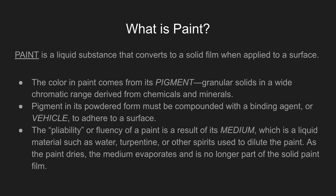The vehicle might be water, oil, or what's called acrylic. The pliability or fluency of a paint is a result of its medium, which is a liquid material such as water, turpentine, or other spirits used to dilute the paint. As the paint dries, the medium evaporates and is no longer part of the solid paint film. So technically speaking, when we're talking about oil paint, there is no more real oil on the painting — what you have left is the dry medium because the oil evaporated.